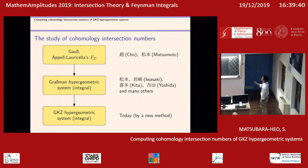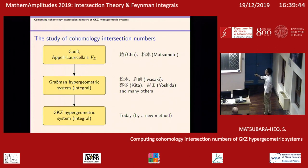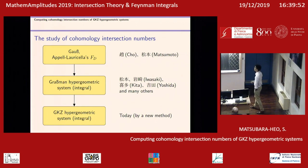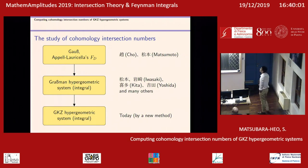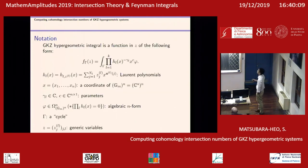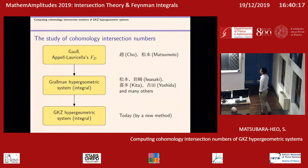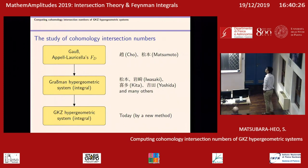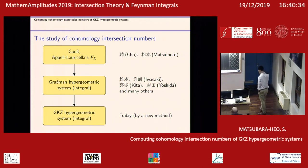Let me give a remark on the current state of research. Cho–Matsumoto developed a systematic method of computing cohomology intersection numbers for a certain class of hypergeometric functions that have one-dimensional integral representations, so the computation is just based on residue calculus. Inspired by this, many people tried to extend this study to more general hypergeometric systems. The most successful class is the so-called Grassmannian hypergeometric system, where the Laurent polynomials are all linear, of degree 1, and the study is related to hyperplane arrangements. Today I'd like to discuss an even more general setting, which is not a straightforward generalization, so we need to develop a different method.